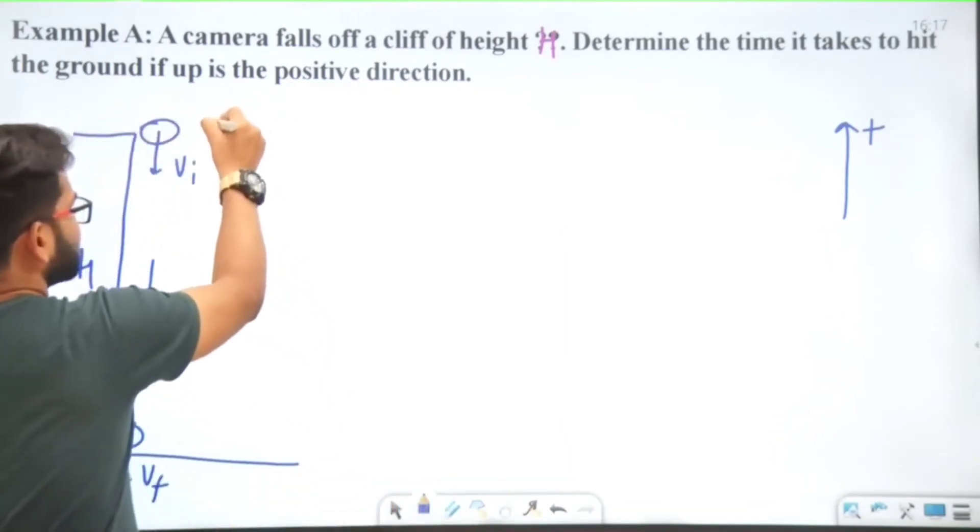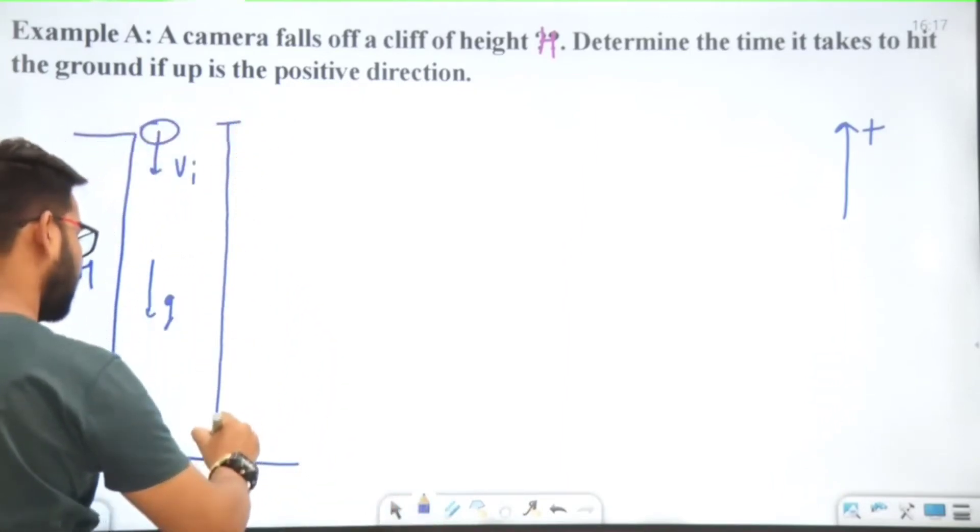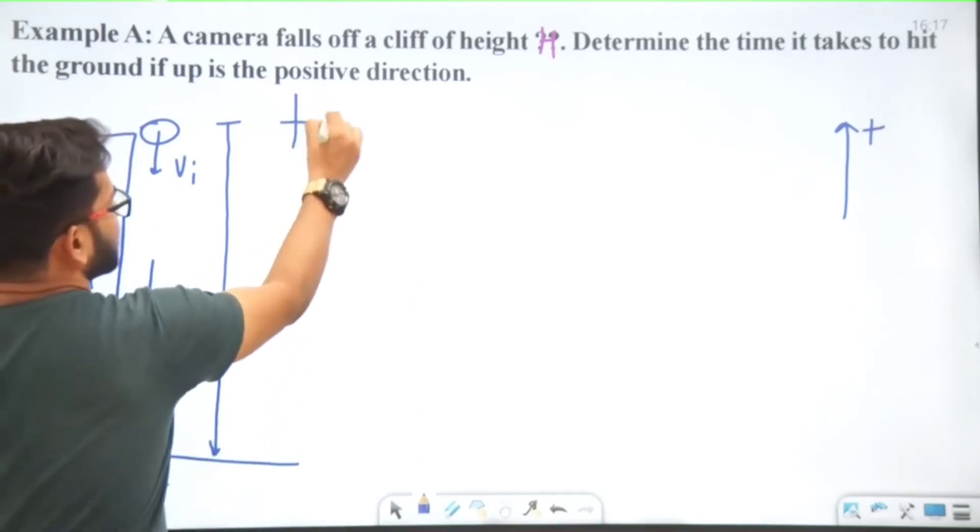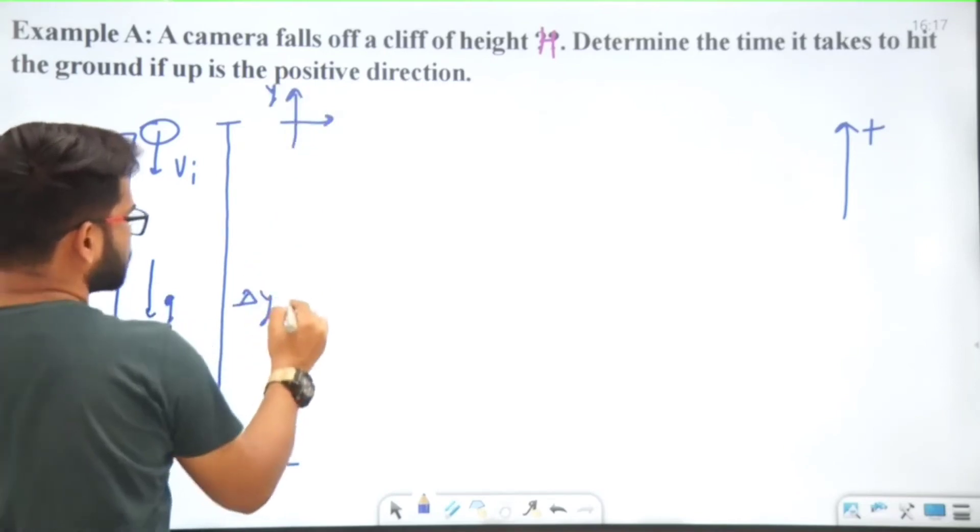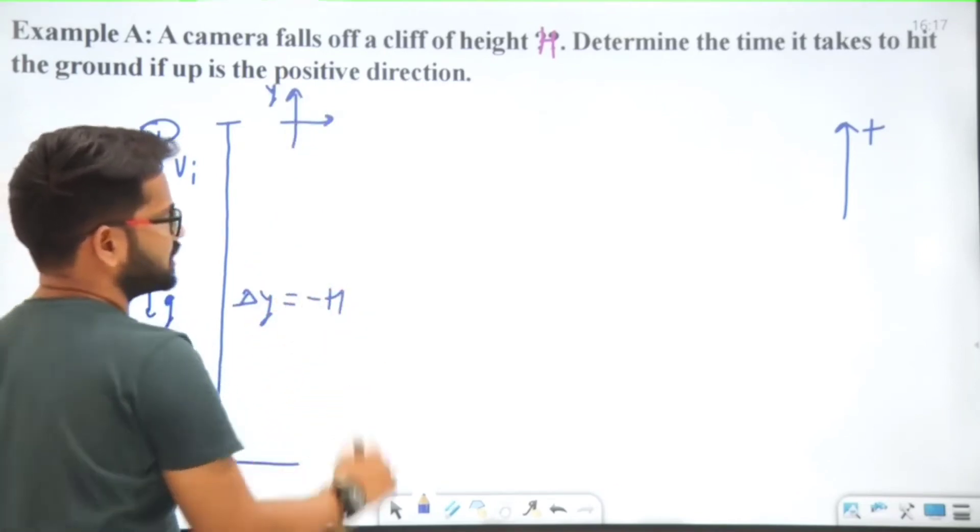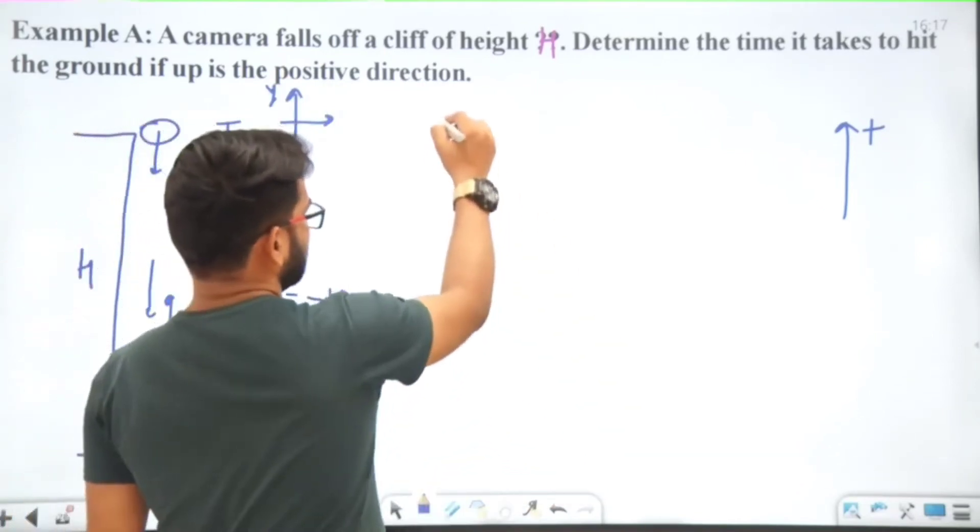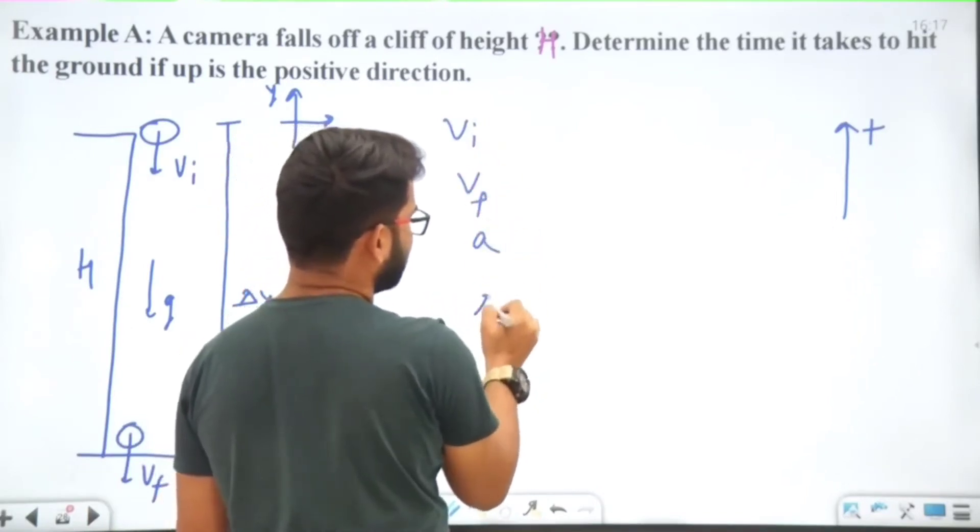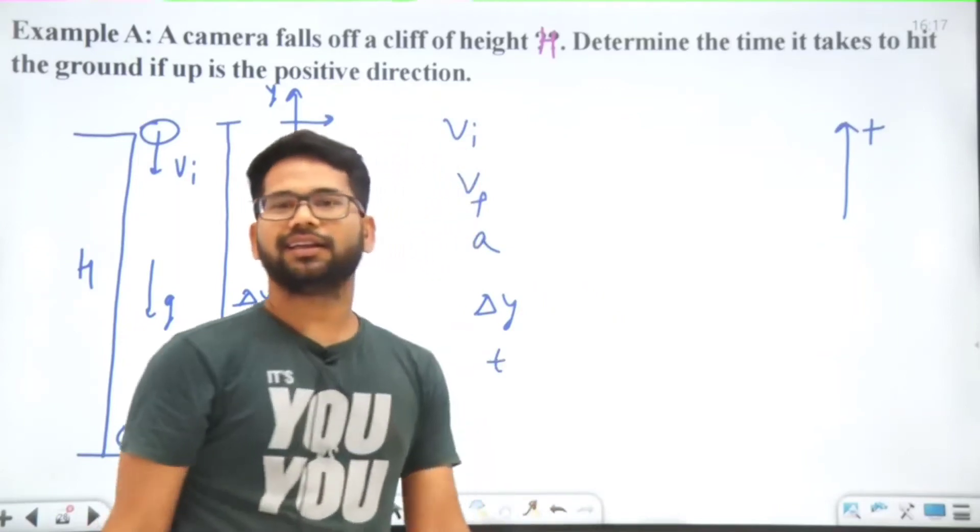We have to take upward action as positive, so Delta Y will be minus H. We have VI, VF, a, Delta Y, and T. We are taking motion along the vertical direction, so instead of writing Delta X, we are writing Delta Y.